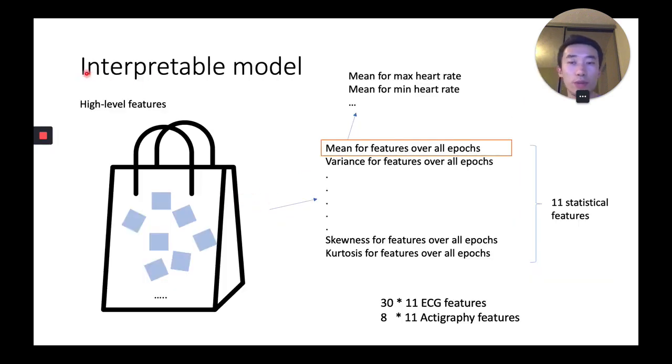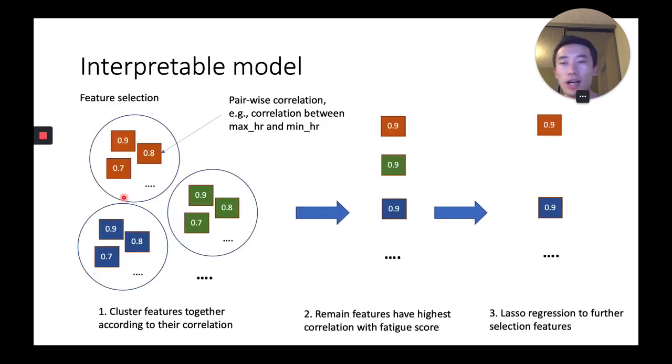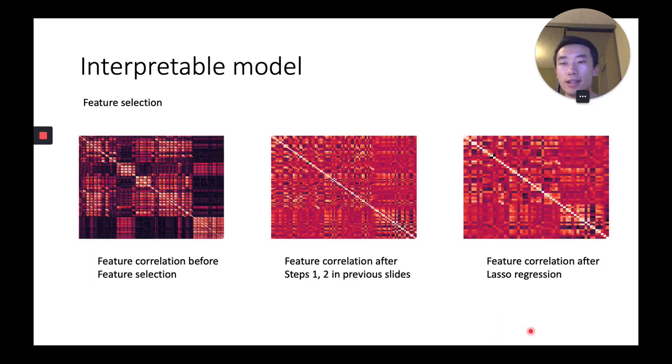For the interpretable model, we first build high-level features which ignore the time information. Then we do feature selection because the high-level features have very high dimension. We use Lasso for feature selection. This is a feature correlation heat map.